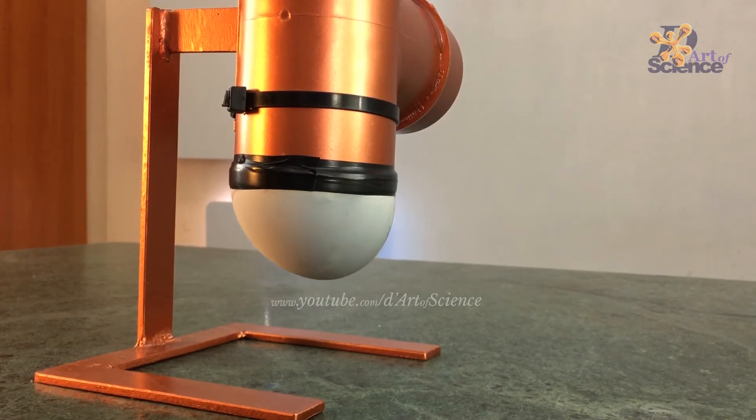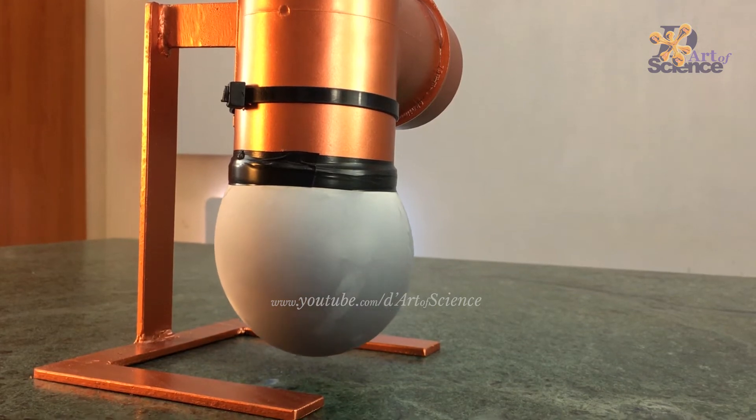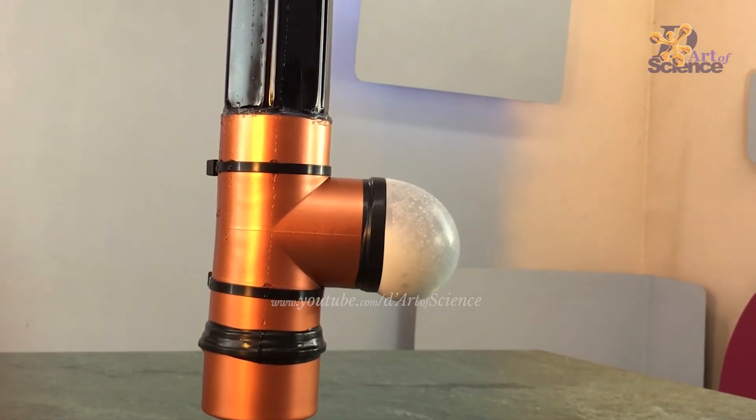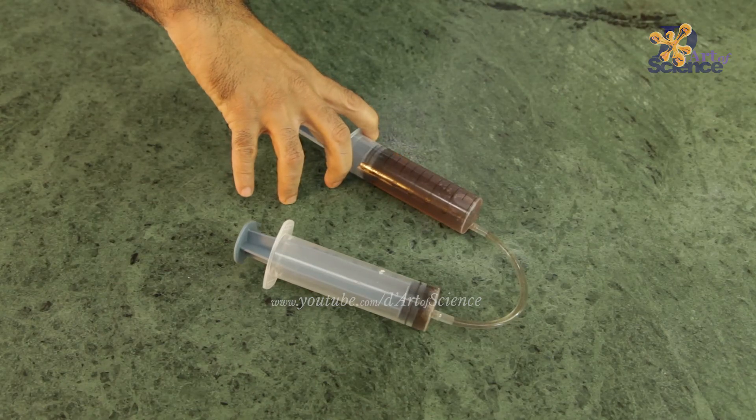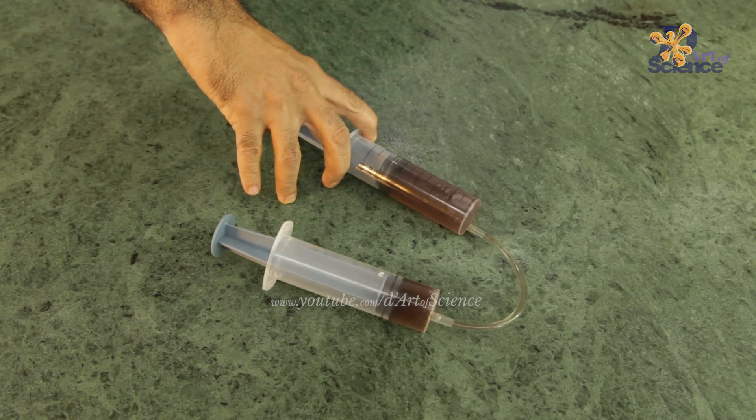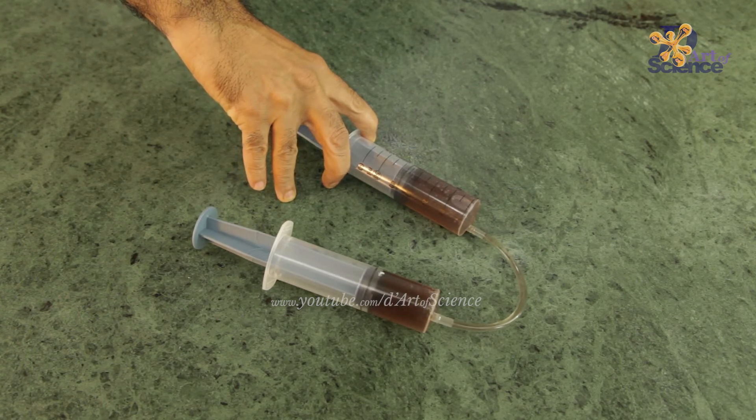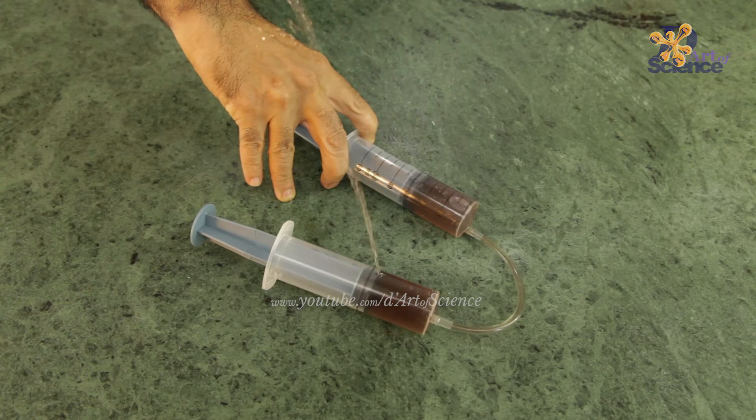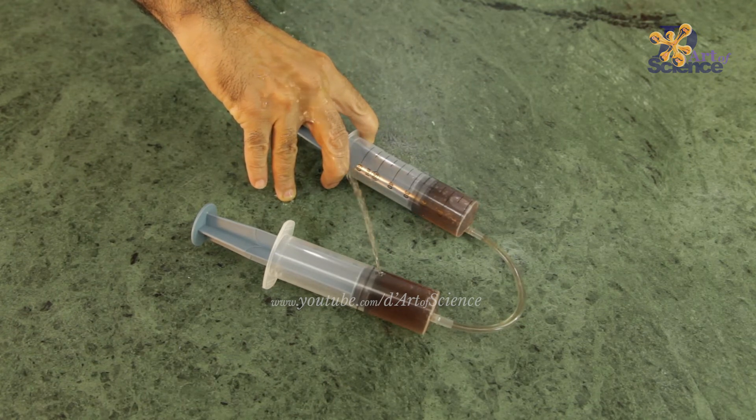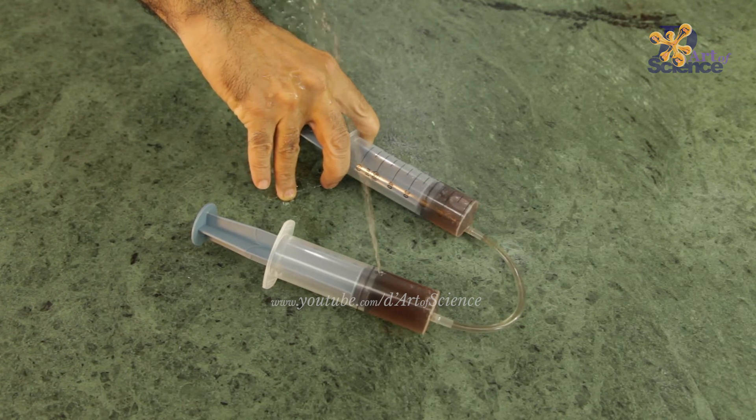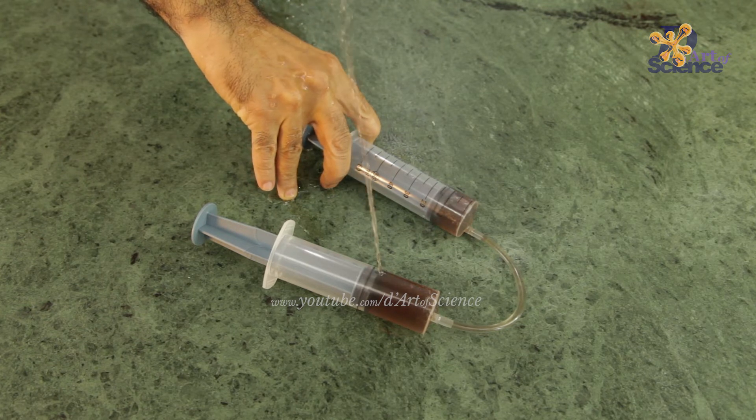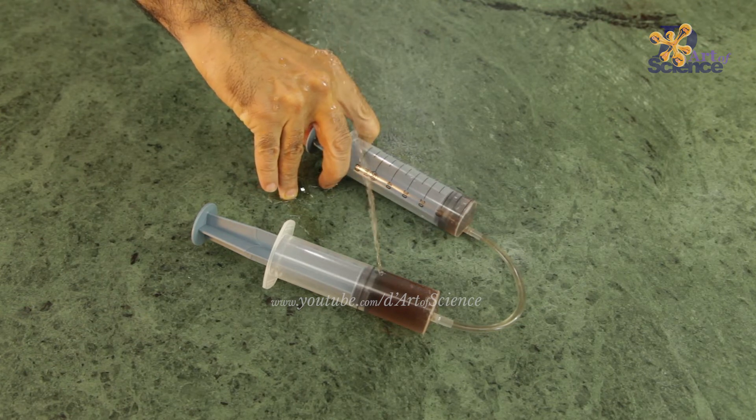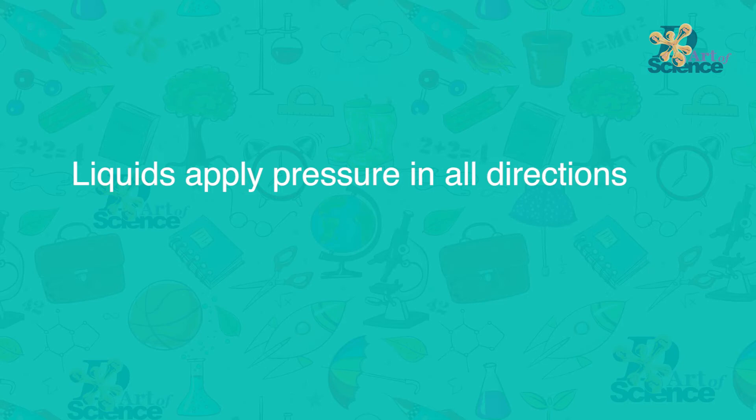Till now we have seen that liquids exert pressure on the bottom of the container and on the side walls. The even more interesting thing is that liquids can exert pressure on all sides including upwards. A good example of this is if you have ever seen a leaking water pipe on the road side. You will mostly see the water spraying out sometimes like a big fountain. This is because water in most pipes is pumped under pressure and that puts pressure on the side walls of the pipes, no matter if the pipe is horizontal or vertical. Therefore the pressure is in all directions.